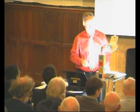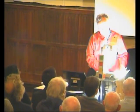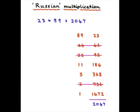Just to show it works the other way around as well: if I want to multiply 89 by 23, I keep on dividing — 44, ignore the half, 22, 11, 5, 2, 1. Meanwhile, I keep on doubling 23: 46, 92, and so on. Then I cross out those rows where there's an even number on the left — that one, that one, and that one. If I now add the remaining numbers on the right, again I get 2,047.